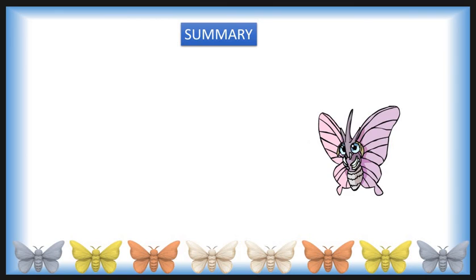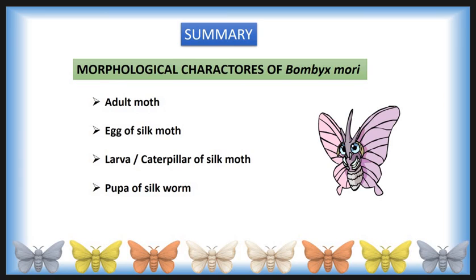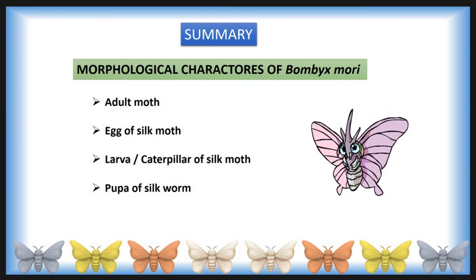In summary, in this lecture we have studied the morphological characters of Bombyx mori — that is, the characters of the adult moth, egg of silk moth, caterpillar of silk moth, and pupa of silkworm. These are the life stages of Bombyx mori.